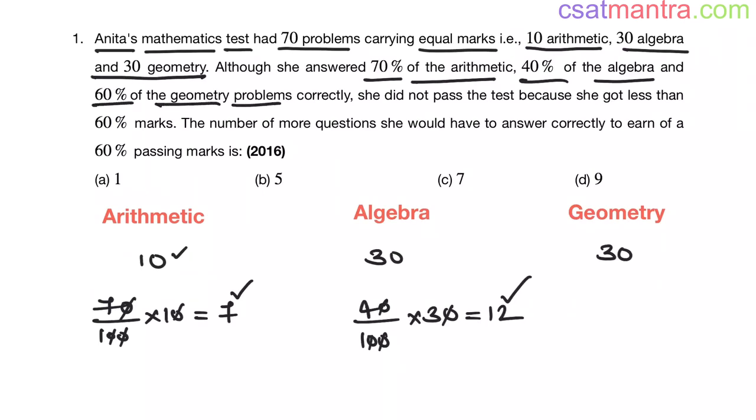60% of the geometry problems, 60 by 100 into 30, zeros cancel out, that is equal to 18. These are all correctly answered problems, my friends.